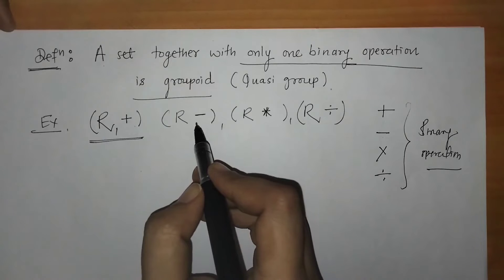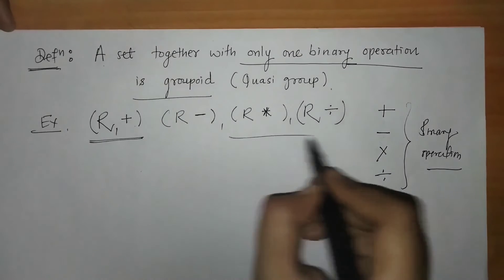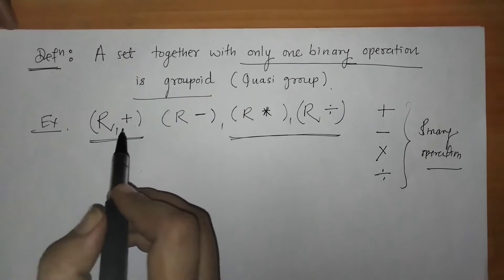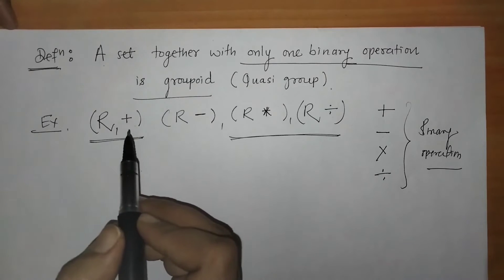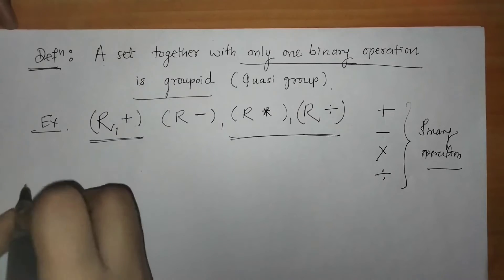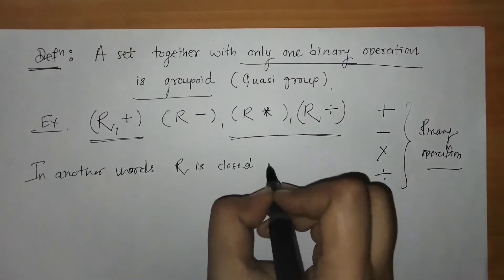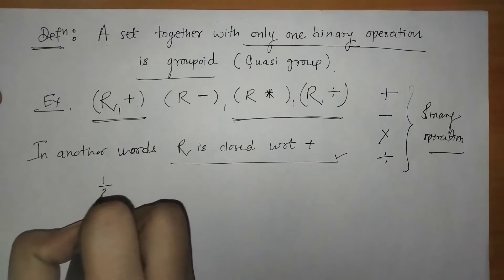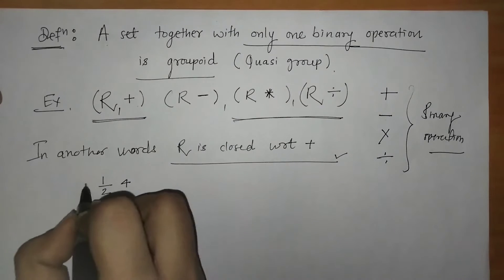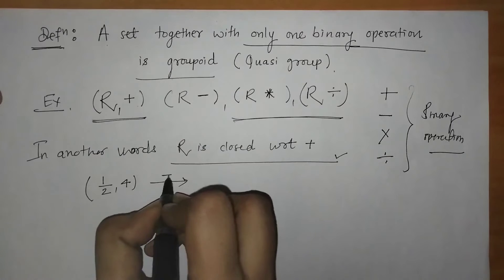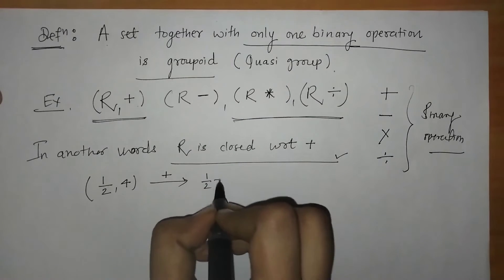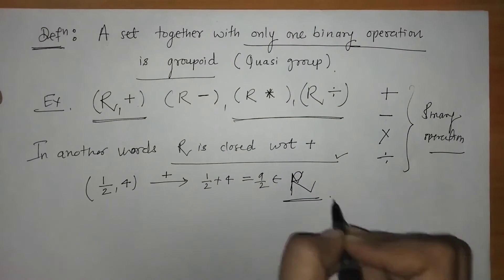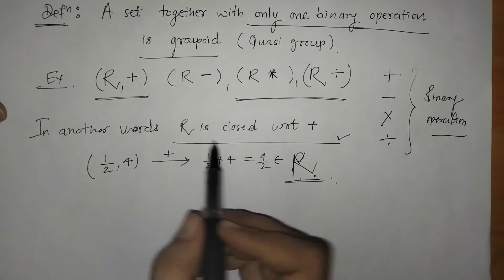When we take subtraction of any two real numbers, we get another real number, same with multiplication and division. In other words, set R is closed with respect to the addition operation. For example, if we take 1/2 and 4 and operate addition, we get 1/2 plus 4, which is again a real number. So we say that set R is closed with respect to addition.